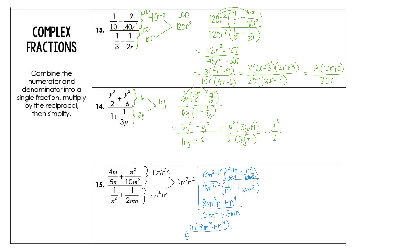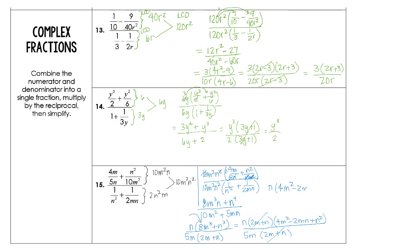Nothing else will factor — however, this parenthesis is the sum of cubes. So we need to factor that. When we factor the sum of cubes, what's being cubed plus what else is being cubed, then we plug into the rest of that formula. And notice we will have something to cancel — that's why we go back and factor when we can. The 2M plus N terms cancel. The final answer of this never-ending problem is going to be N times 4M squared minus 2MN plus N squared, all over 5M.